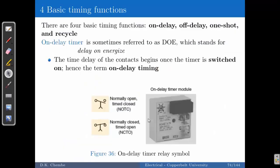There are four basic timing functions to understand. The two common ones are on-delay and off-delay, but we also have a one-shot and a recycle. A recycle is a cyclic, repetitive operation. The on-delay timer is usually referred to as DOE — delay on energize. These timers begin timing once the circuit has been switched on or energized. On-delay timers have a standard symbol where the arrows are pointing upwards, indicating an on-delay timer.